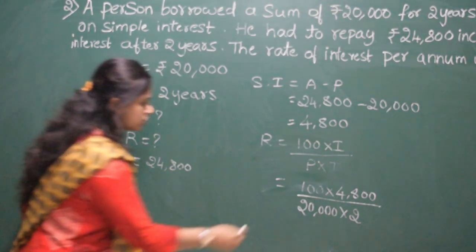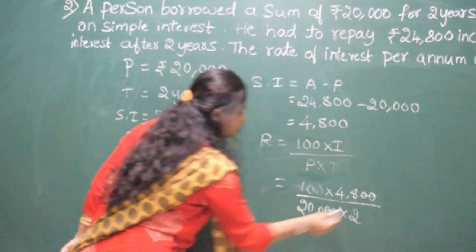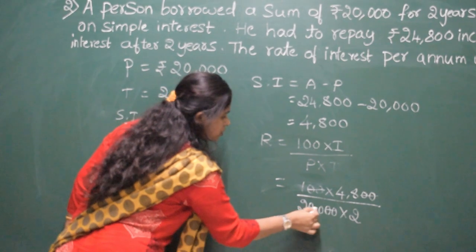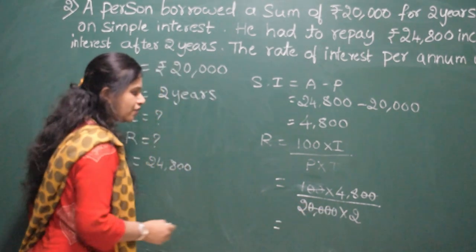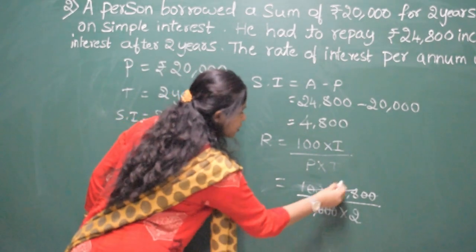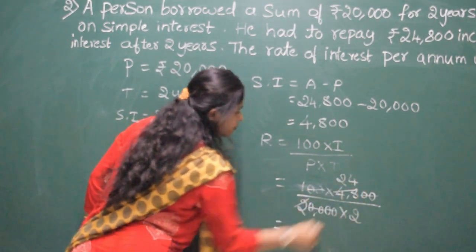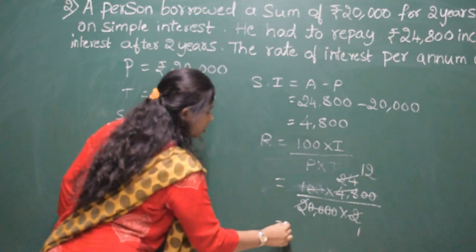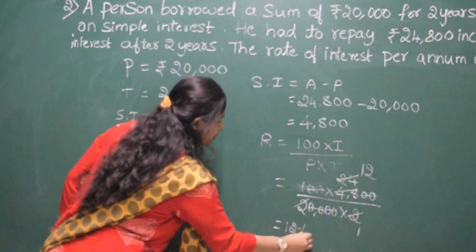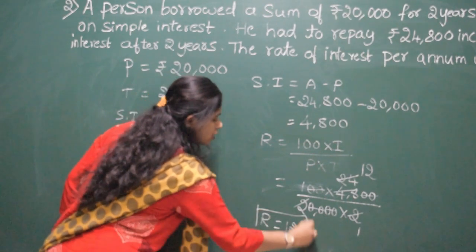Now cancel these two zeros. Here two zeros, here two zeros and again here two zeros. Cancel it. And then, divide two ones up, two zeros up. Again, you divide by two. Two ones up, two zeros up. You got 12%. Rate is 12%.